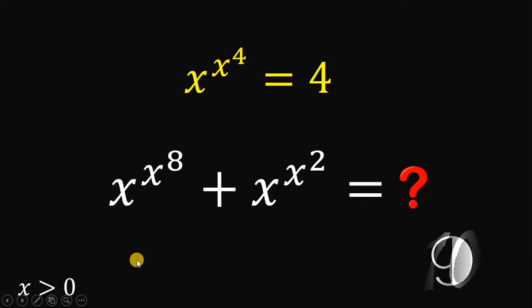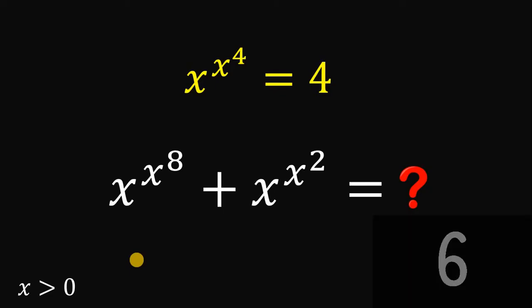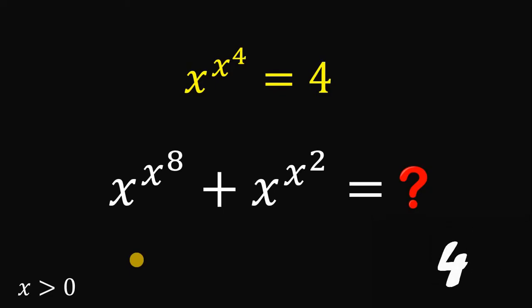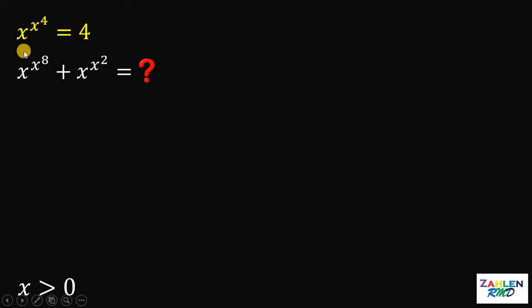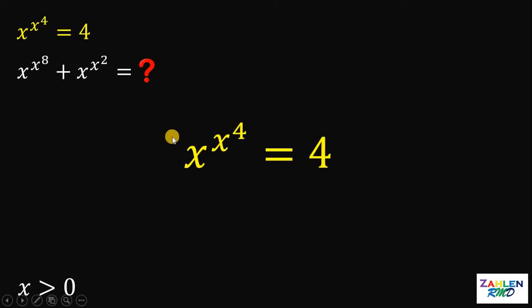You can pause this video if you want to give this problem a try. Now, let's answer this question together. Given that x raised to x raised to 4 equals 4, our goal is to solve for the value of x raised to x raised to 8 plus x raised to x raised to 2.